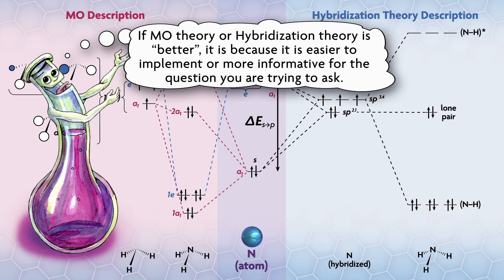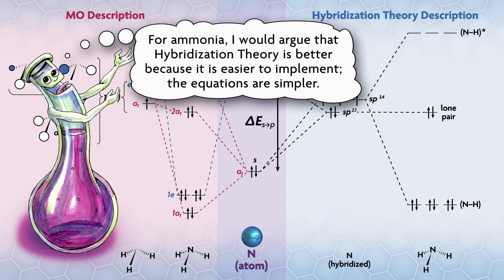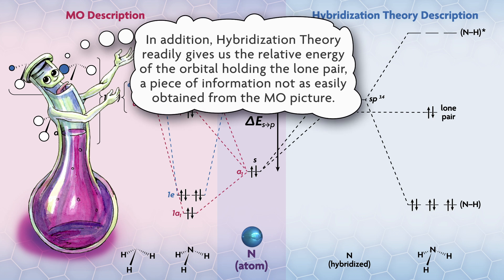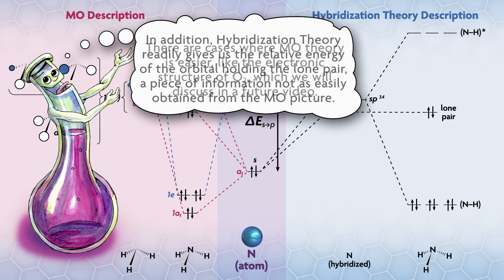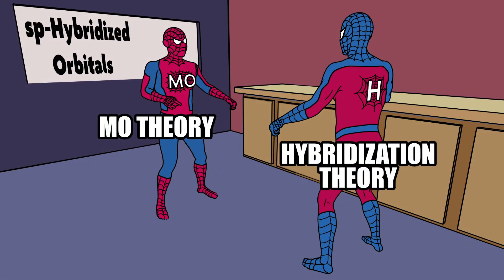If MO theory or hybridization theory is better, it is because it is easier to implement or more informative for the question you're trying to ask. For ammonia, I would argue that hybridization theory is better because it's easier to implement. The equations are simpler. In addition, hybridization theory readily gives us the relative energy of the orbital holding the lone pair, a piece of information not as easily obtained from the MO picture. There are cases where MO theory is easier, like the electronic structure of O₂, which we will discuss in a future video. So the showdown ends with a draw, or maybe even looks kind of like that Spider-Man meme, because MO and hybridization theory really give you basically the same information.